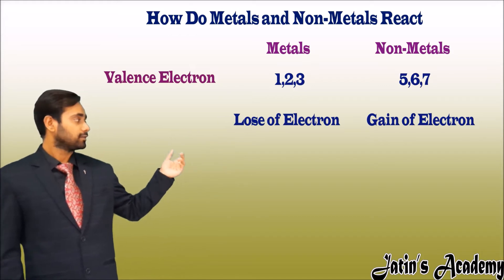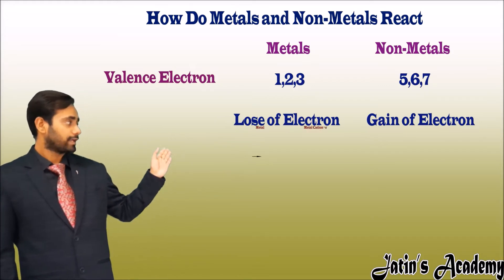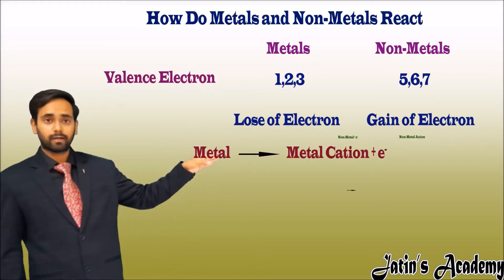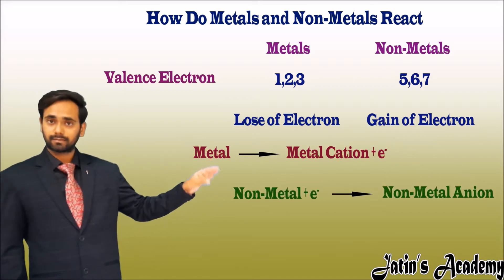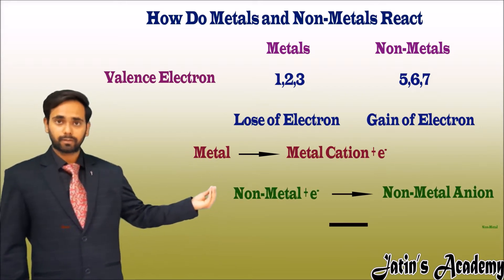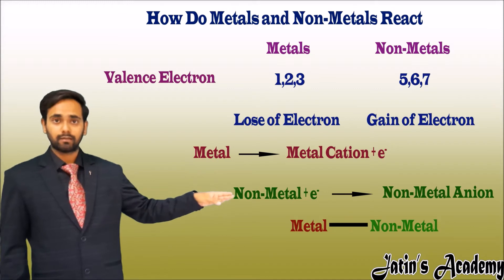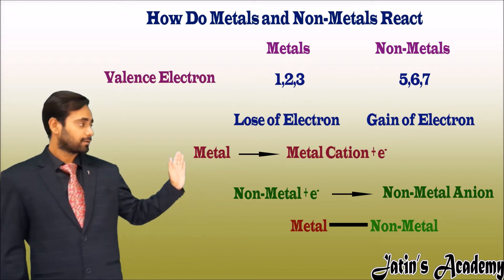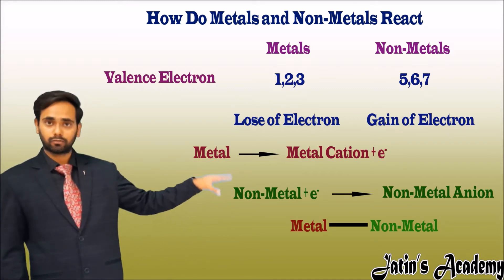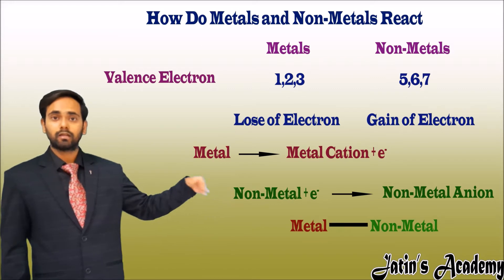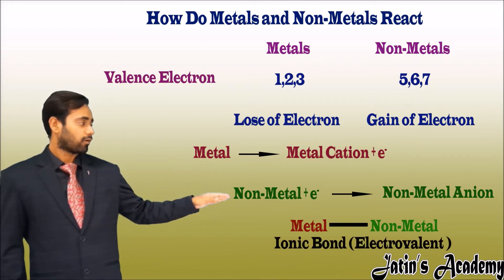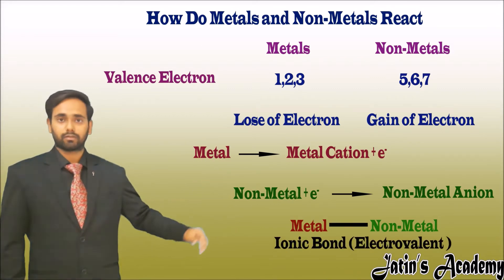So, metals donate the electrons and the nonmetal accepts the same electrons, and a bond is formed between the metal and nonmetal. When there is a complete transfer of electrons from metal to nonmetal, the bond is called an ionic bond or electrovalent bond.